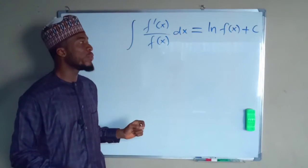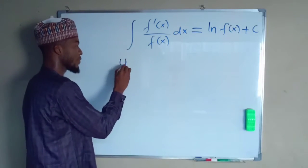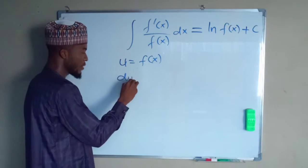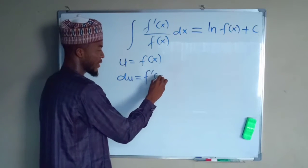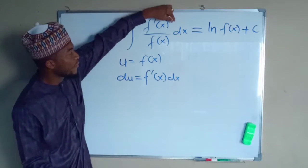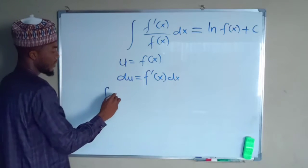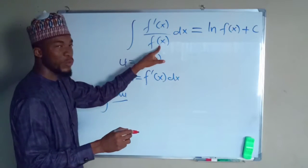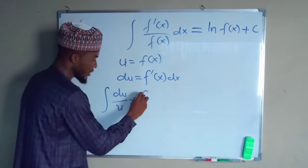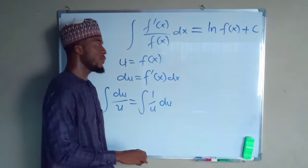But before I solve some examples, I want to prove this for you. Let u be equal to f of x. The derivative of u with respect to x, du, is going to be f prime of x dx. In the main integration we have f prime of x dx, and we have it here also, so we can substitute this with du divided by f of x, which we have already let to be equal to u.